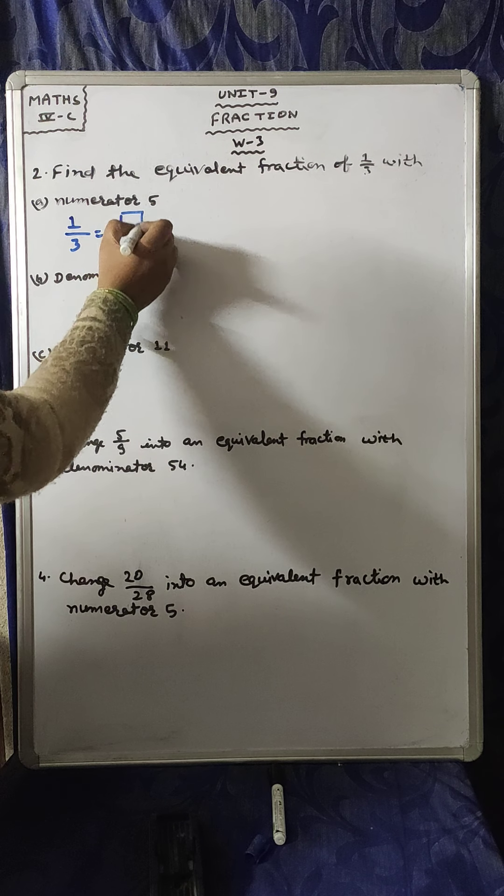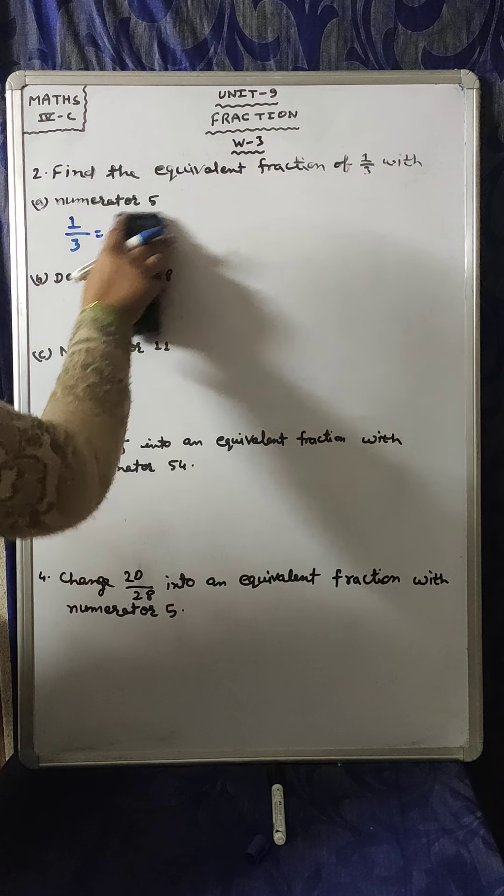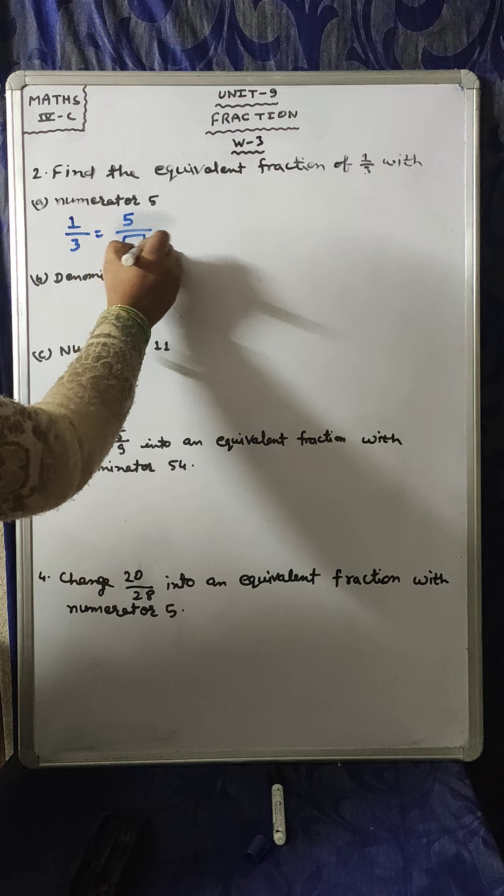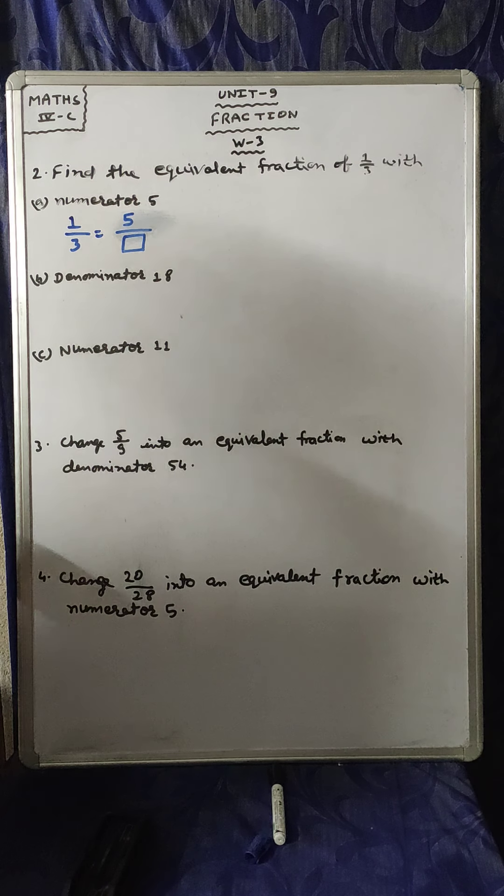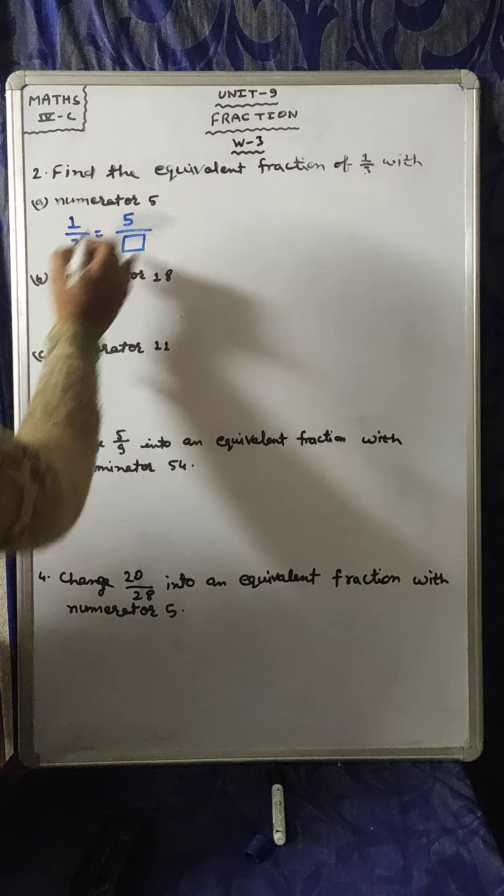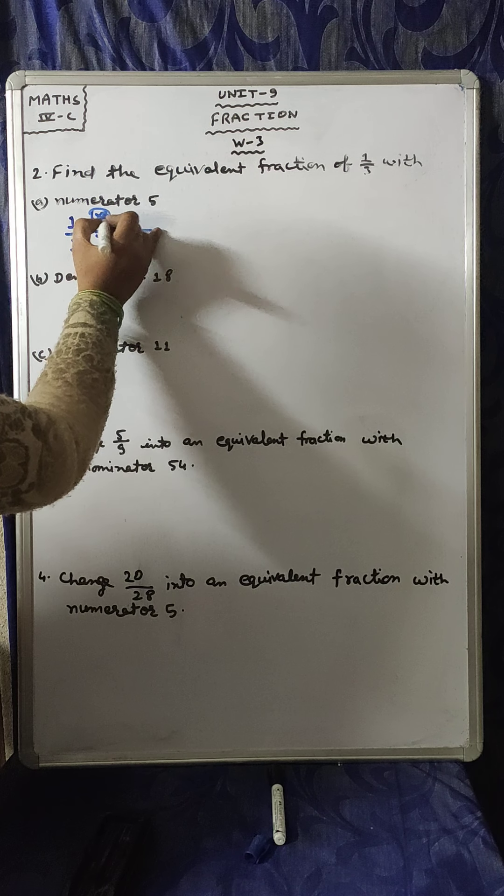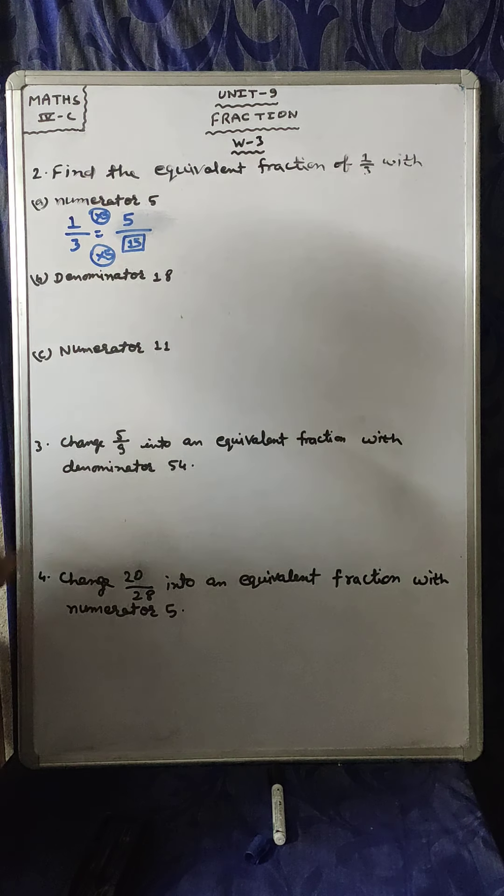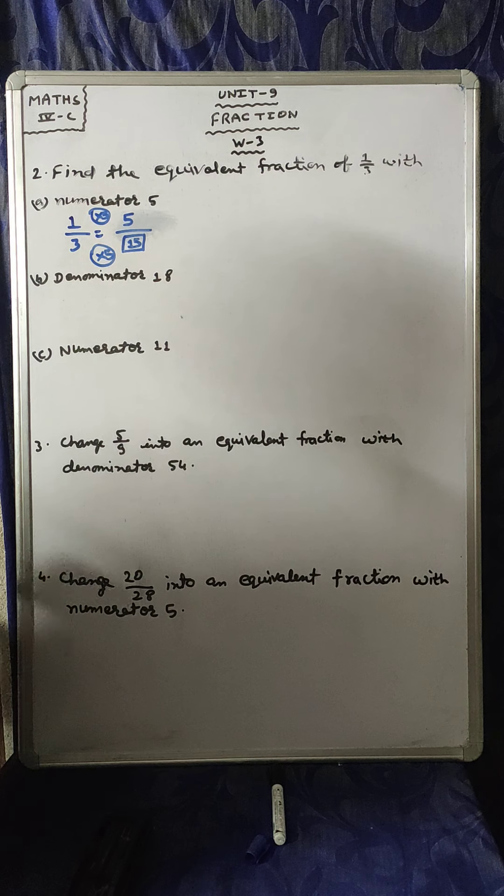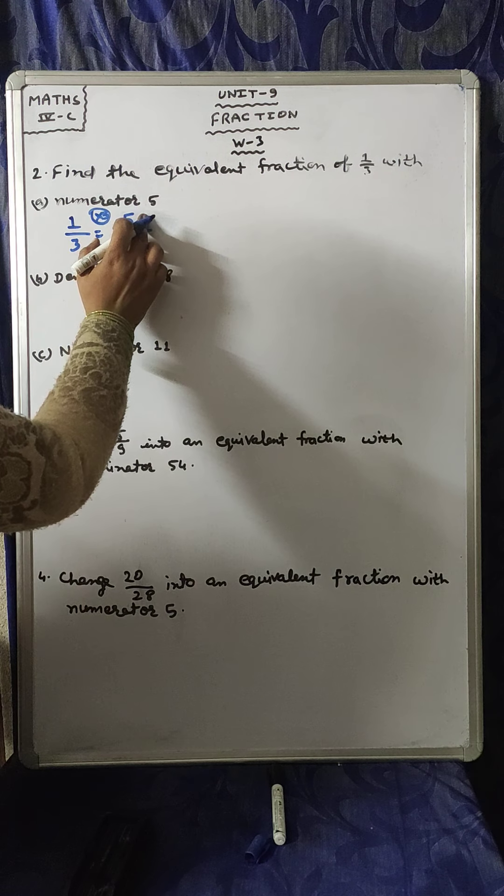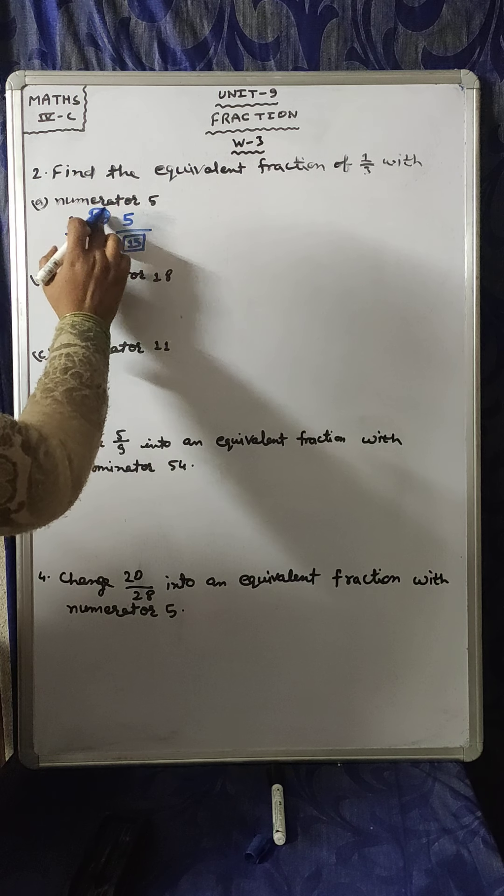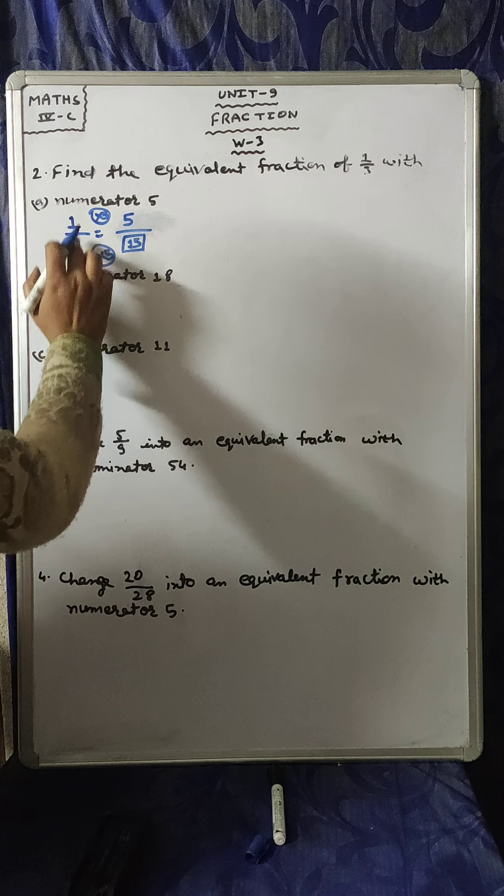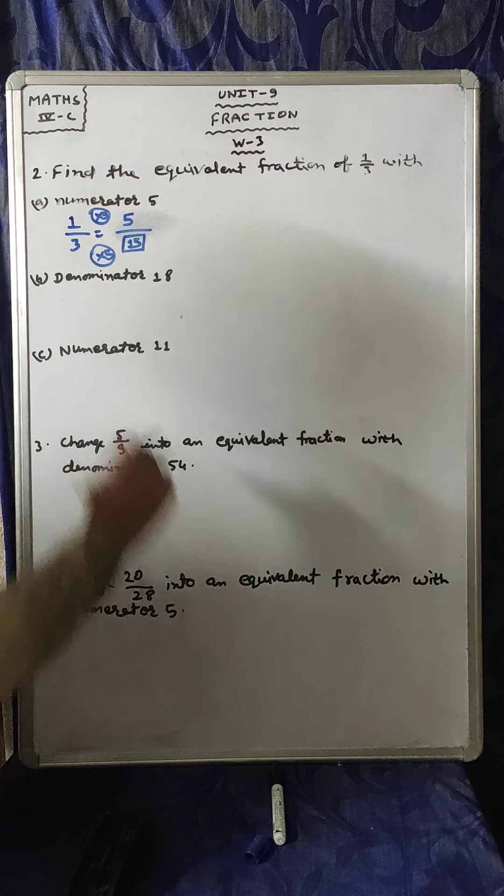Here, the numerator is given. We have to find out the denominator to get an equivalent fraction. 1 times 5 is 5, then 3 times 5 is 15. 5 is 5 times 1, and 15 is 5 times 3. That's why 1 times 5 is 5 and 3 times 5 is 15.